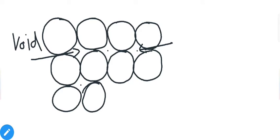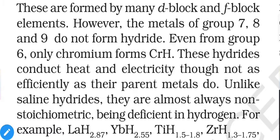Interstitial hydrides change some properties of the metal — they increase the strength of the metal and decrease its conductivity. D and f-block elements usually form these types of hydrides. Groups 7, 8, and 9 do not form hydrides, and in group 6, only chromium forms hydrides.